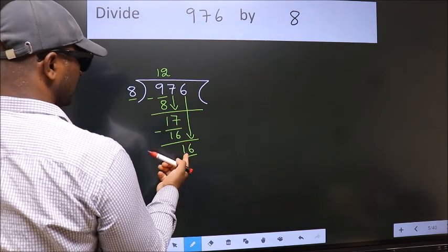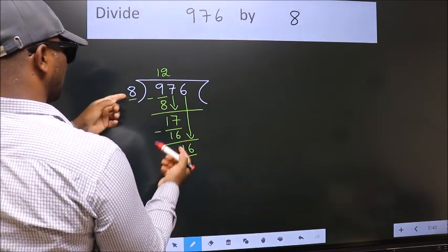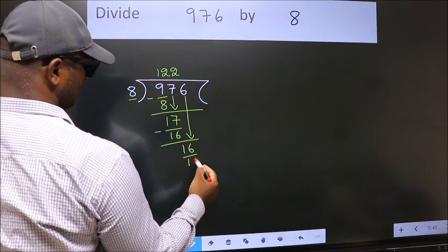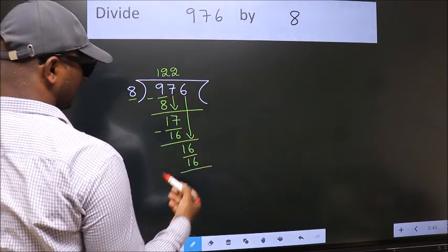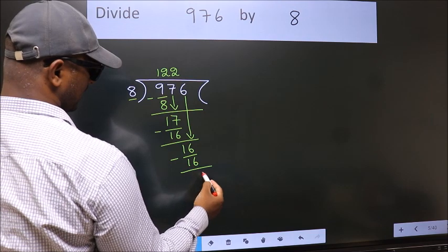When do we get 16? In 8 table, 8 2s 16. Now, we subtract. We get 0.